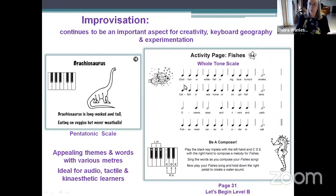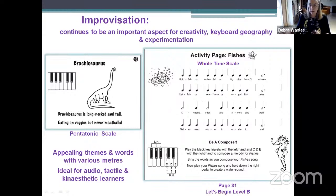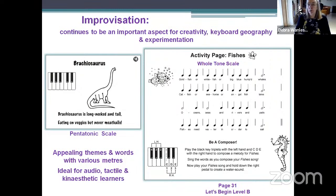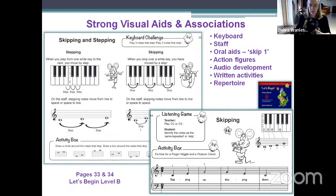Some more examples of improvisation — the Brontosaurus from creative learning is also included in the method book. We're developing creativity, keyboard geography, and experimentation using appealing themes in various meters. The fishies piece is in triple meter. These are great for audio, tactile, and kinesthetic learners, though visual learners may need some coaching to experiment — your 'producer' disposition students will want to make sure they're doing it correctly. I call it controlled improvisation.